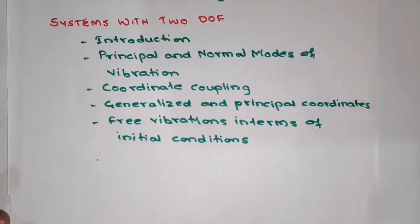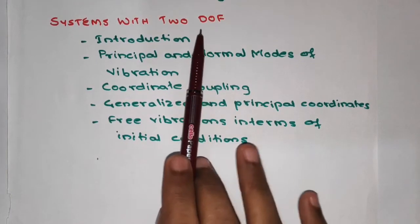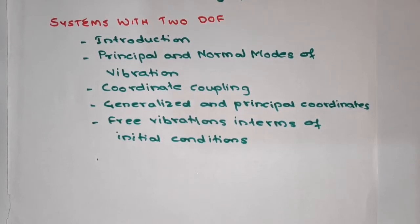In the sixth chapter, we will be seeing systems with two degrees of freedom (2-DOF). The previous chapters focus mainly on single degree of freedom systems, so here we move to two DOF systems. We will cover the introduction, principle and normal modes of vibrations, coordinate coupling, generalized and principal coordinates, and free vibrations in terms of initial conditions.